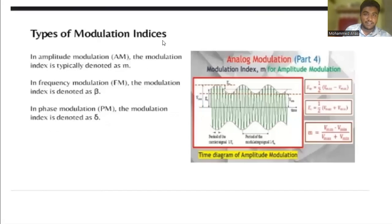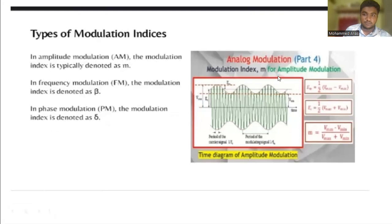Types of modulation: in amplitude modulation (AM), the modulation index is typically denoted as M. In frequency modulation (FM), the modulation index is denoted as beta (β). In phase modulation (PM), the modulation index is denoted as gamma (γ) — not theta, sorry, it is gamma.